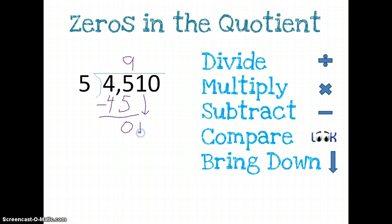And now here's where things get a little bit different. We have 1. How many times will 5 go into 1? The answer is 0. So I need to write a 0 up here at the top, right above my 1.